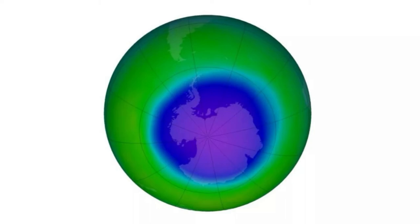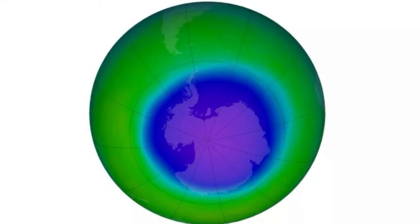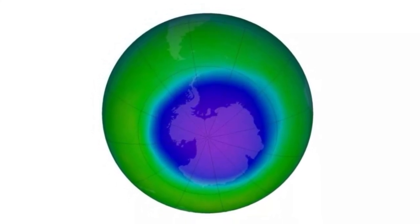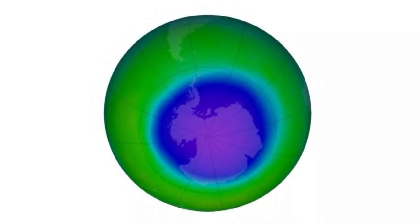Global agreements like the Montreal Protocol, which regulates the production and consumption of ozone-depleting substances, have helped to repair the ozone hole. And despite the ozone hole's increasing size this year, scientists generally agree that the hole is shrinking. Earlier this year, the National Oceanic and Atmospheric Administration reported that ozone-depleting substances in the atmosphere have decreased by 50% since 1980. The report also noted that if this downward trend continues, the ozone layer could be fully repaired by 2070.